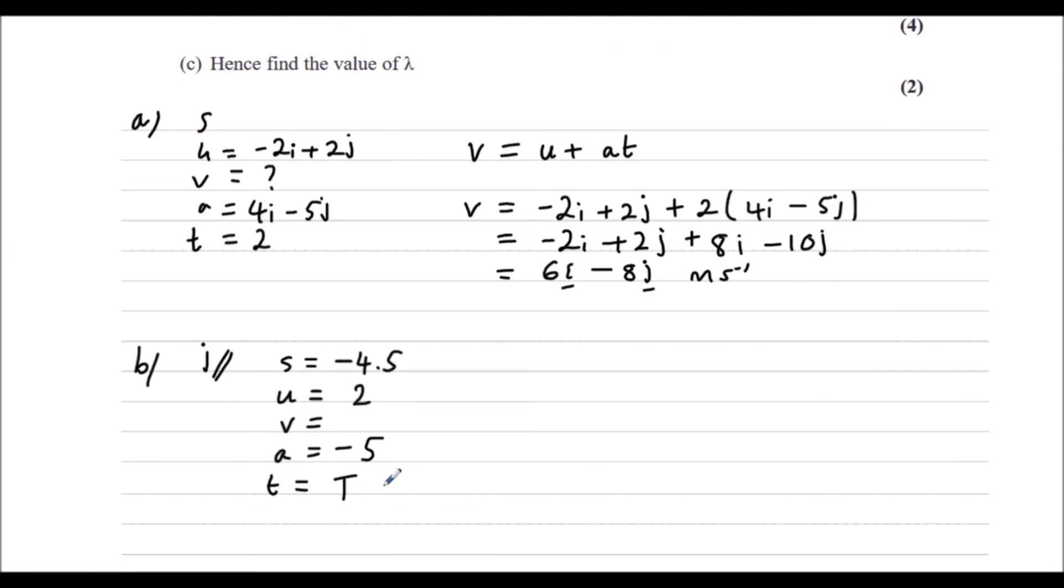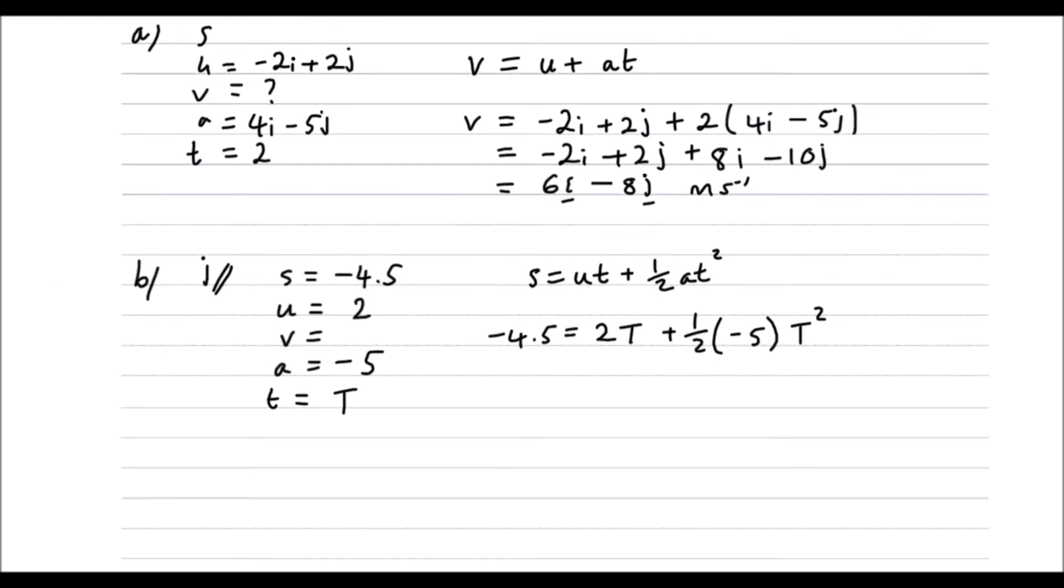We want the equation without v in it, that is s equals ut plus half at squared. So we can use that equation to find t. Substituting in, minus 4.5 equals 2T plus half times minus 5T squared. So minus 4.5 equals 2T minus 5 over 2T squared.